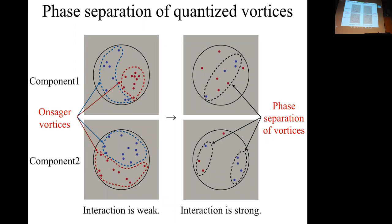The interaction between the atoms of component 1 and component 2: when the vortices form an Onsager vortex, the Onsager vortex is a cluster of like-sign vortices, and in this situation the Onsager vortex is formed in both components, component 1 and component 2. On the other hand, the distribution of vortices can be separated spatially, and we call this novel phenomenon the phase separation of vortices.